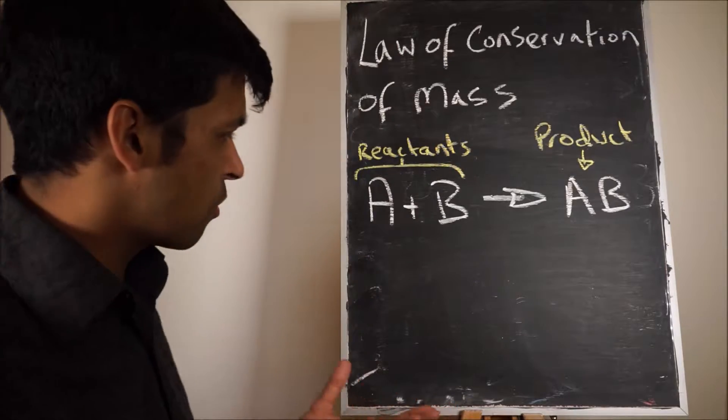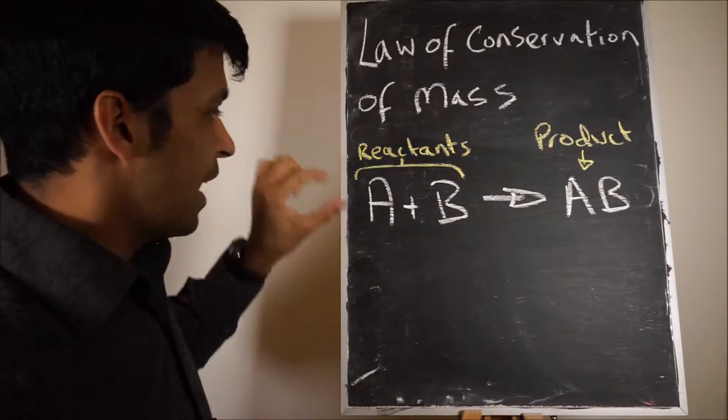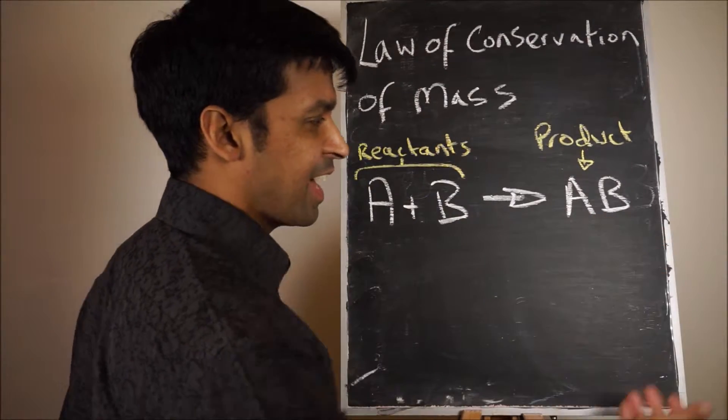Basically, let's just consider a reaction here. We've got A plus B giving you AB. A and B, these are reactants, so they react together and they form a product AB.